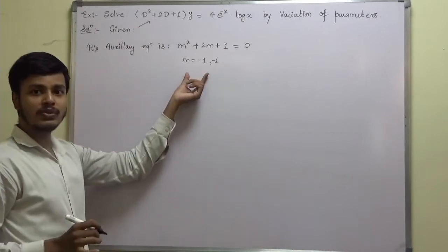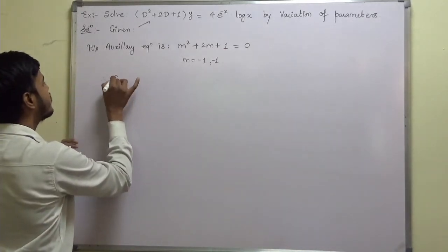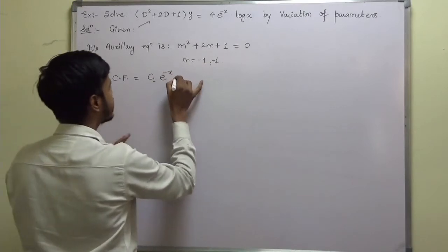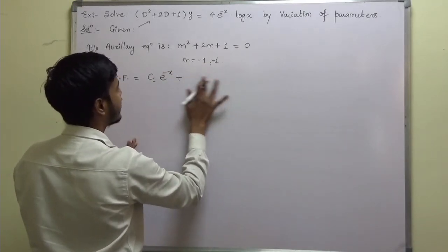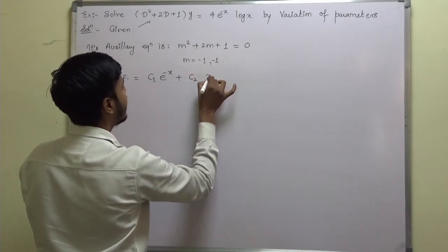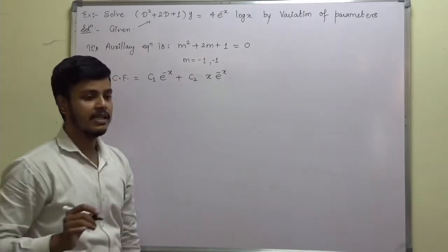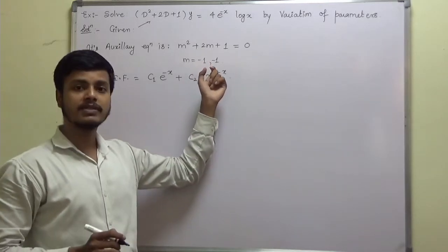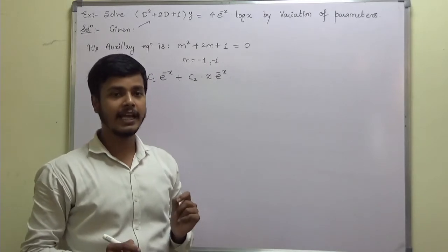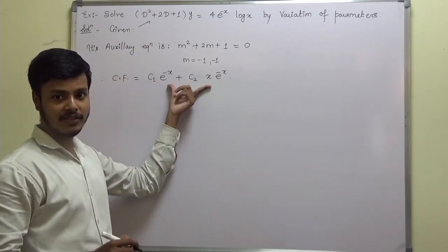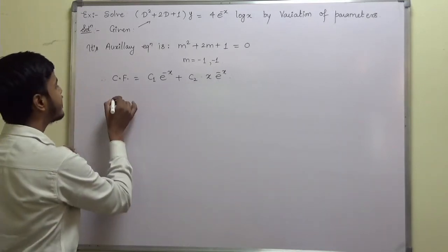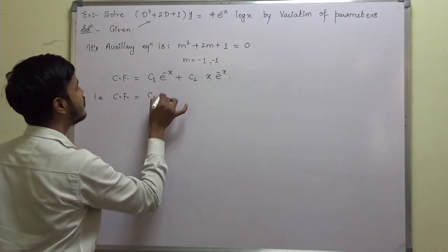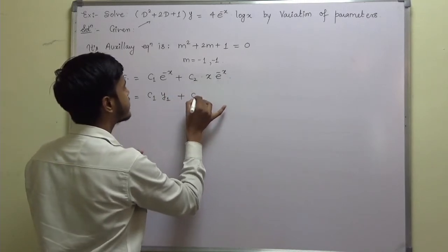Depending on these roots we write the complementary function. Since we have two repeated real roots, this falls under the second rule of complementary function. Therefore, CF = c₁·e^(-x) + c₂·x·e^(-x). We can write this as CF = c₁y₁ + c₂y₂.